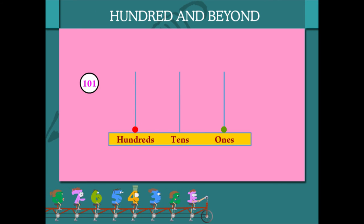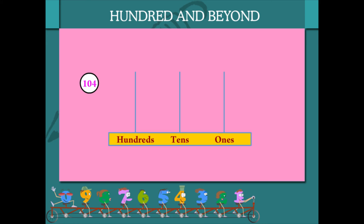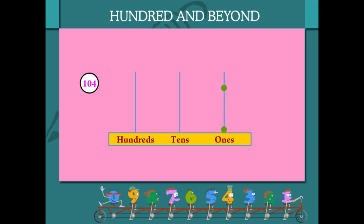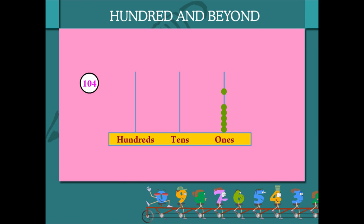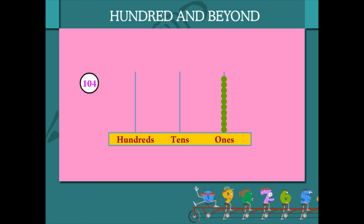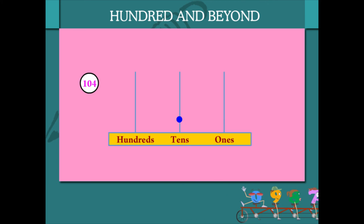Another bead of 1 makes it 101. What about 104? Same story. 10 beads of ones makes 1 bead of tens. 10 beads of tens makes 1 bead of hundreds.